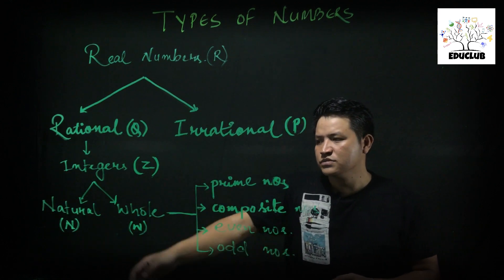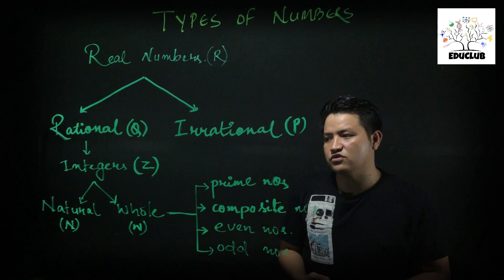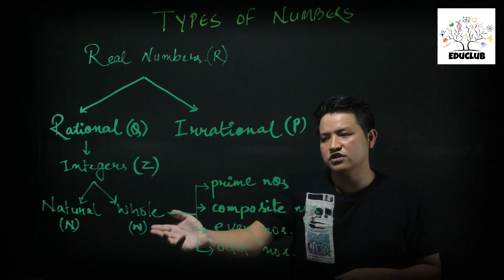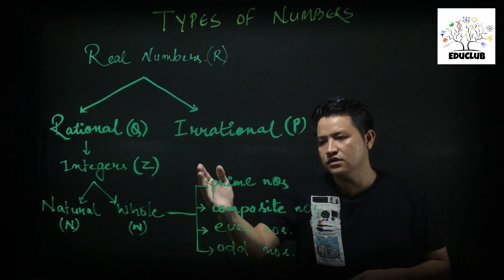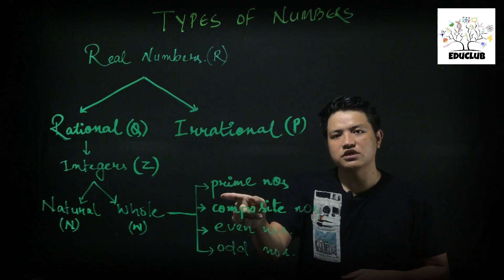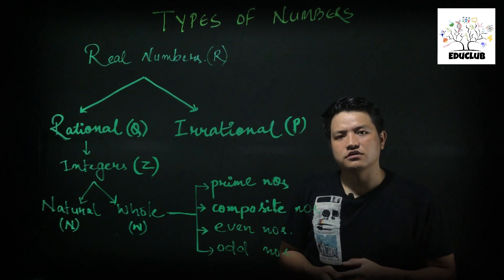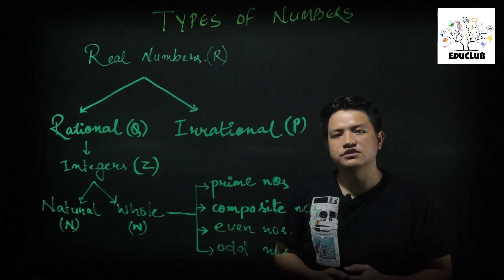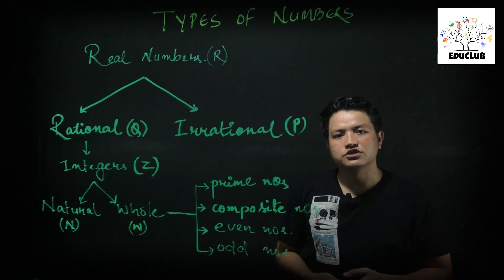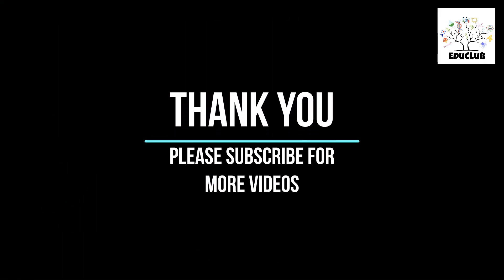Natural numbers are counting numbers — 1, 2, 3, 4, 5 — represented by capital N. Whole numbers include zero plus all natural numbers, represented by capital W. Other types of numbers include prime numbers — numbers with only two factors: 1 and the number itself — composite numbers, which have more than two factors, even numbers which are exactly divisible by 2, and odd numbers which are not divisible by 2. These are the types of numbers.